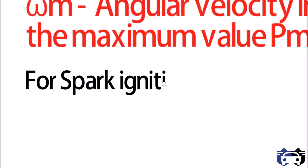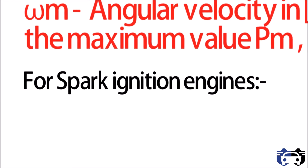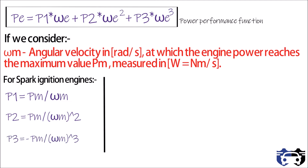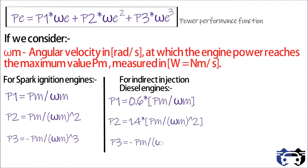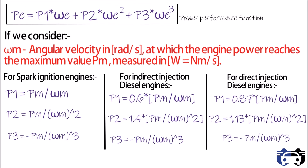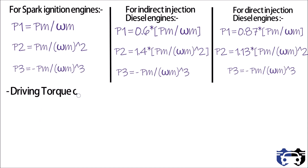then for spark ignition engines: p1 equals pm divided by omega m, p2 equals pm divided by omega m squared, and p3 equals minus pm divided by omega m cubed. Similarly, for indirect injection diesel engines and for direct injection diesel engines, different corresponding values of p1, p2, and p3 are used.